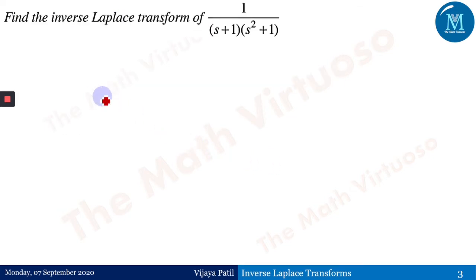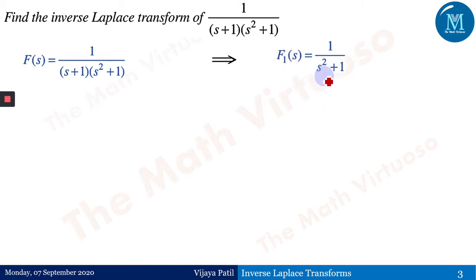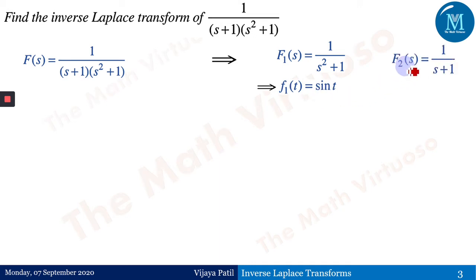Find the inverse Laplace transform of 1/[(s+1)(s²+1)], so f(s) is this. Now let us define f1(s) = 1/(s²+1), whose inverse is f1(t) = sin(t), and f2(s) = 1/(s+1), whose inverse is f2(t) = e^(−t).